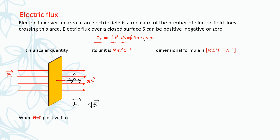Positive electric flux means the electric field lines are passing through the area along the direction of the area vector.